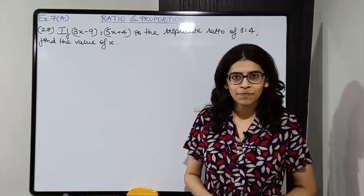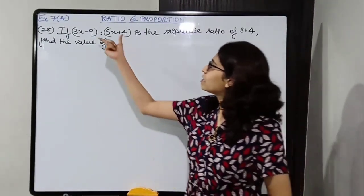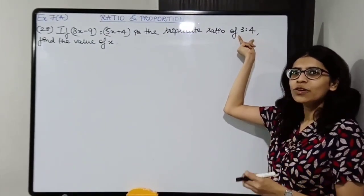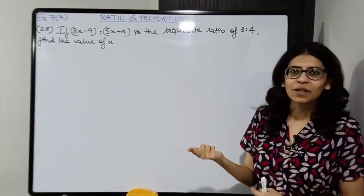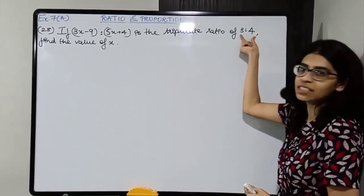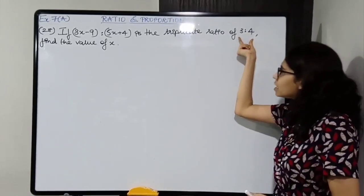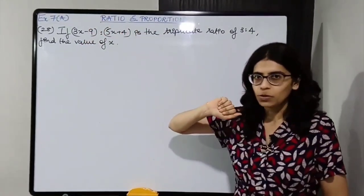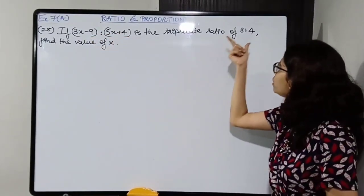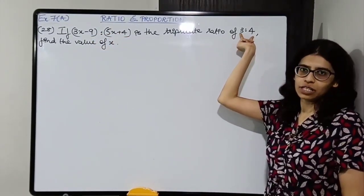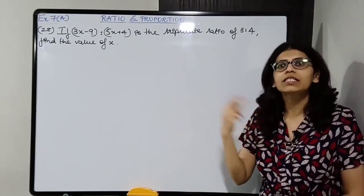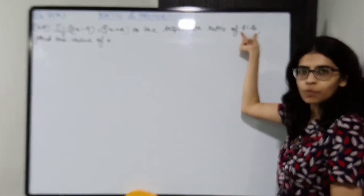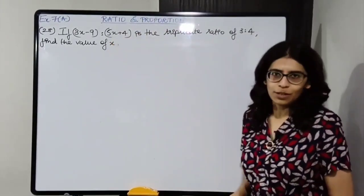Similar to the previous question. You are told that this is the triplicate ratio of 3 is to 4. So you have to triplicate the ratio 3 is to 4. Triplicate means cubing. Duplicate means squaring. So this ratio is equal to the cube of the ratio 3 is to 4.